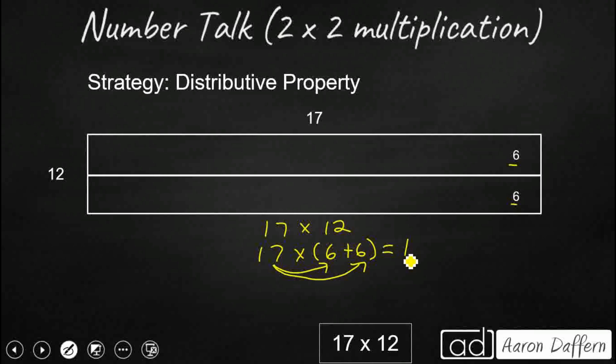So really it's 17 times 6. So we have to do a little bit of mental math there to figure that out. So 7 times 6 is going to be 42, and then 10 times 6 is 60. So that's going to be 102.